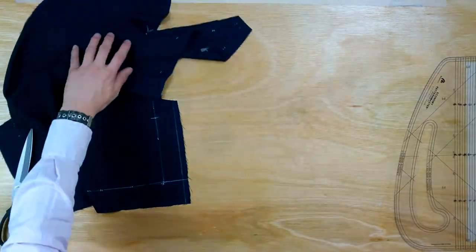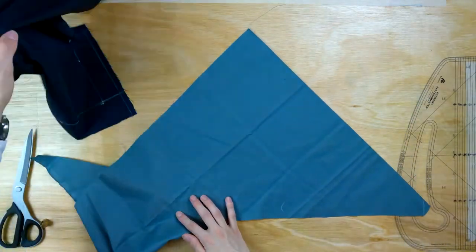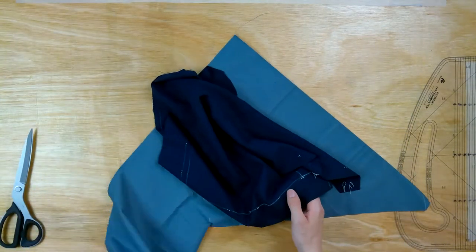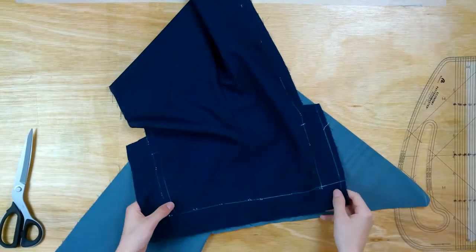Lay the bottom of the sleeve onto some silicia on the bias. Trace either side, a little above the hem and above the top of the cuff. Cut it out.